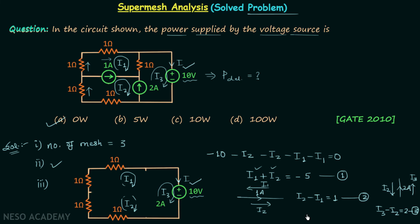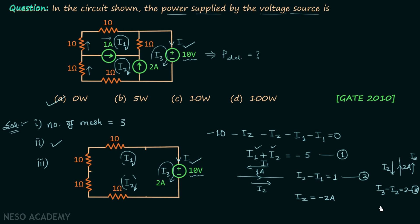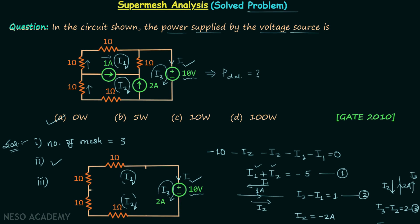Adding Equation 1 and Equation 2 gives us I3 equal to 2. Substituting into Equation 3: I3 plus 2 equals 2, or I3 equals 0 ampere. Since the current is 0 ampere, the power delivered equals 0 multiplied by 10, which is 0 watts. We get the same answer using super mesh analysis.